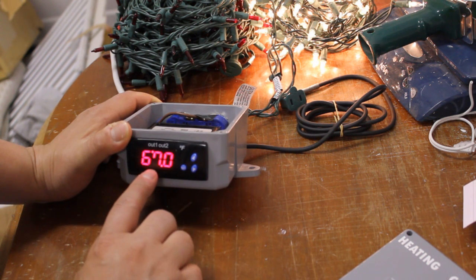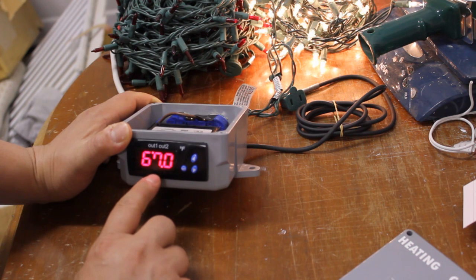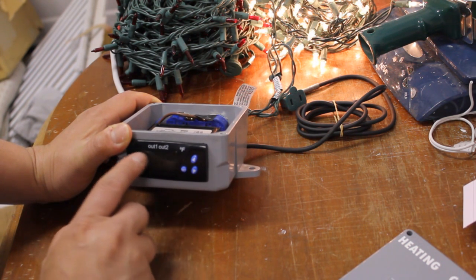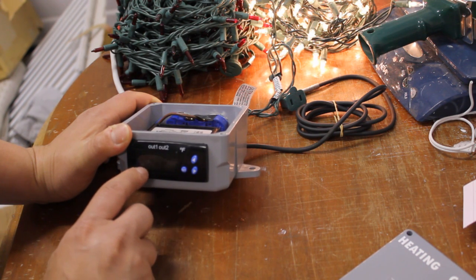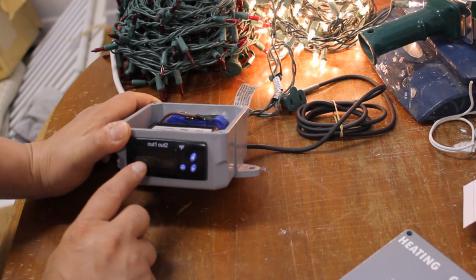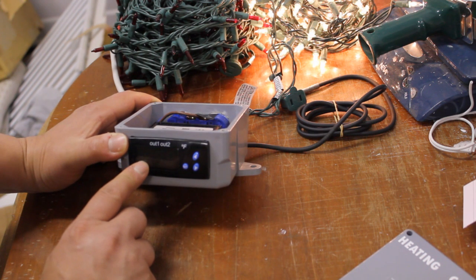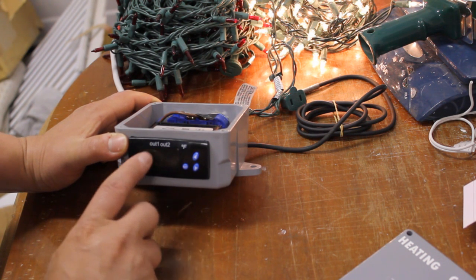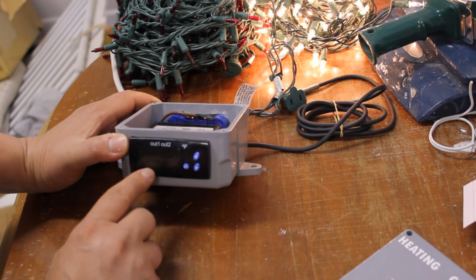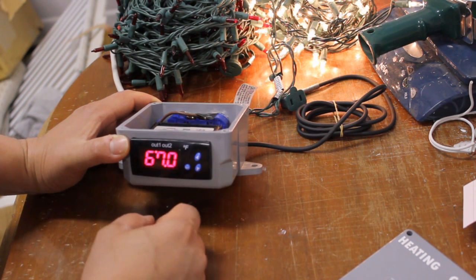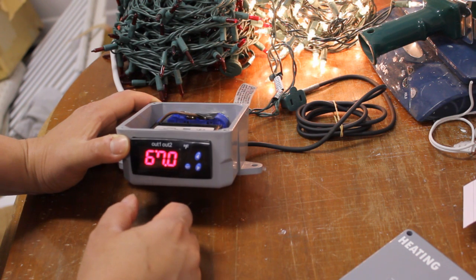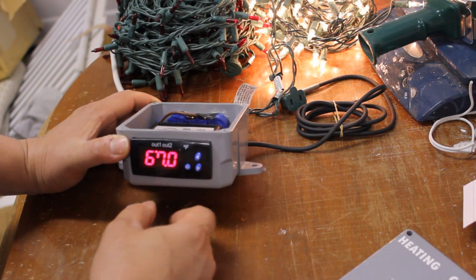So right now you can tell it's blinking and that's telling me that I'm setting the set point and the dot right on the out one side over here is telling me that I'm setting the temperature or set point for the first relay. So since I'm using that for my heating mode I have this set to 67 degrees Fahrenheit. In other words when it drops to 67 it will engage the heating circuit.